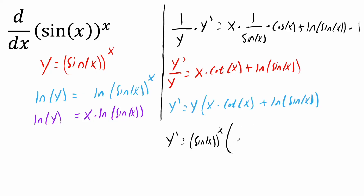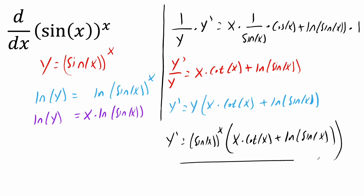So our final answer is: y prime equals sine(x) raised to x, times the quantity x times cotangent(x) plus ln(sine(x)). This right here is our final answer, and that's all we need to do for this problem.